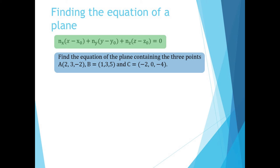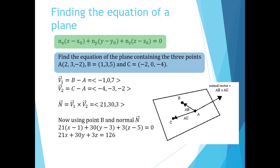In this example, a equals 2, 3, negative 2; b equals 1, 3, 5; and c equals negative 2, 0, negative 4. We let b1 be the vector joining a and b, so b minus a equals negative 1, 0, 7. And let b2 be the vector joining c and a, so c minus a equals negative 4, negative 3, negative 2. Now our normal vector is just b1 cross b2, which is 21, 30, 3. Plugging the normal n and our point b into the equation above, we get 21(x minus 1) plus 30(y minus 3) plus 3(z minus 5) equals 0, which simplifies to 21x plus 30y plus 3z equals 126.